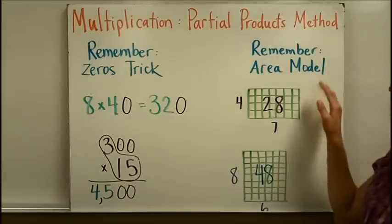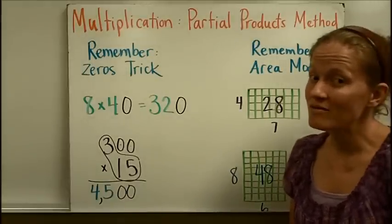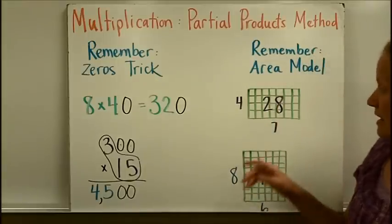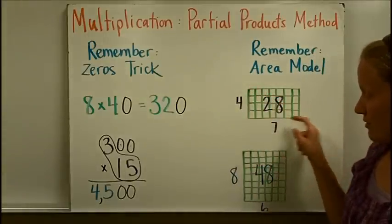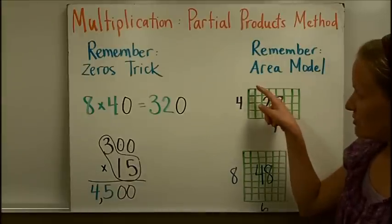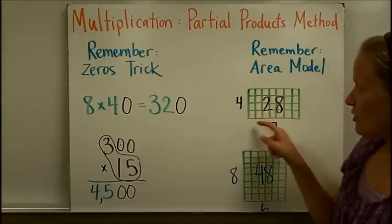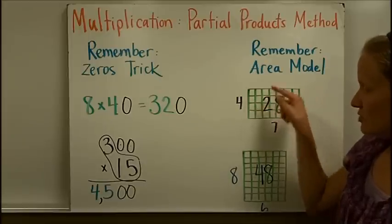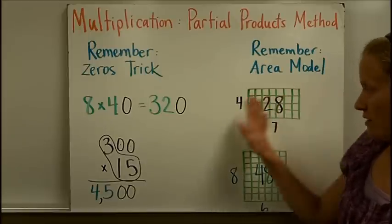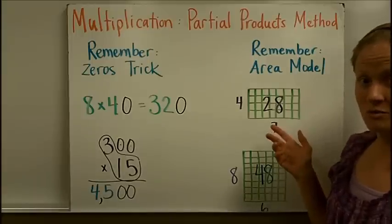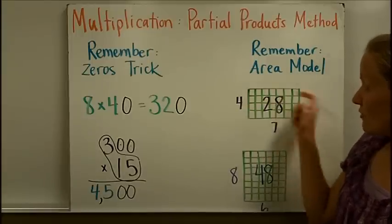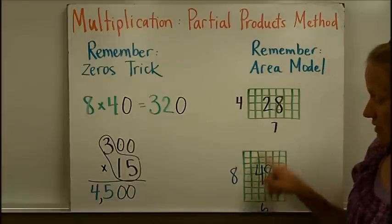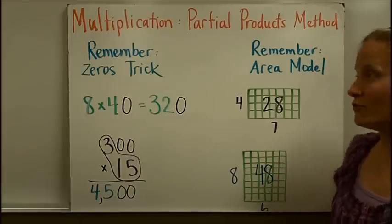Also, you should think back to when you first learned about multiplication. One of the ways you can model multiplication is with the area model. You can draw a rectangle to represent a multiplication problem. So four rows of seven means the amount of squares in that area is the answer — four rows of seven makes twenty-eight blocks. Similarly, eight rows of six would make a product of forty-eight.